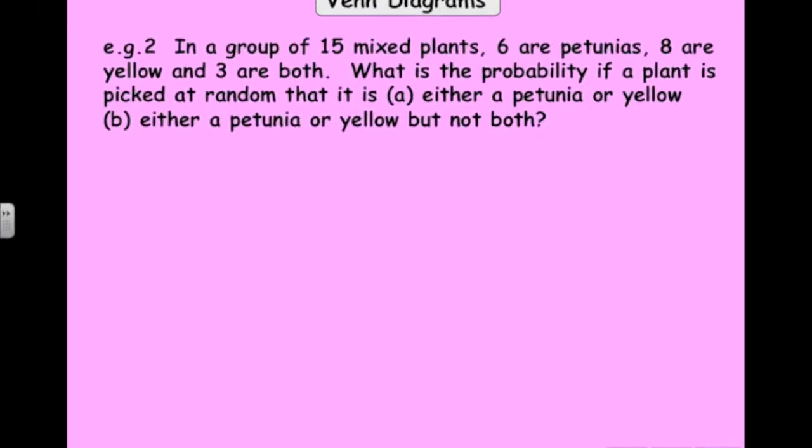Here's one more example of using Venn diagrams to solve problems. We've got 15 mixed plants, 6 petunias, 8 yellow, and 3 both. What's the probability that if a plant is picked at random that's either a petunia or yellow, either a petunia or yellow, but not both? Tricky without the diagram.